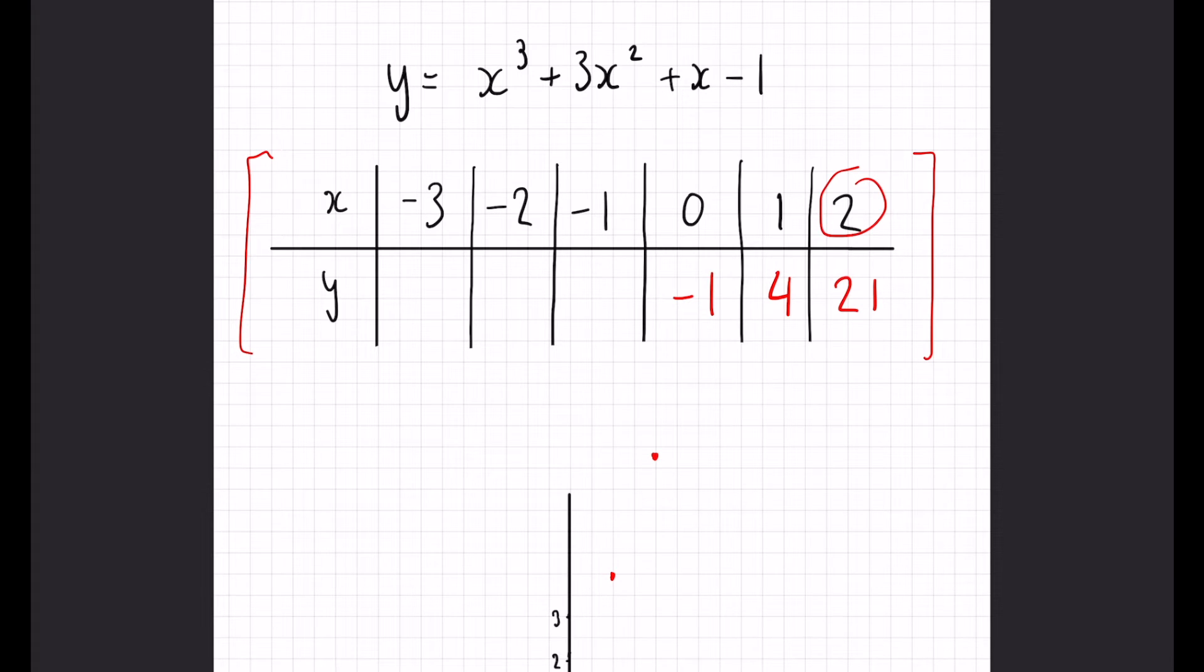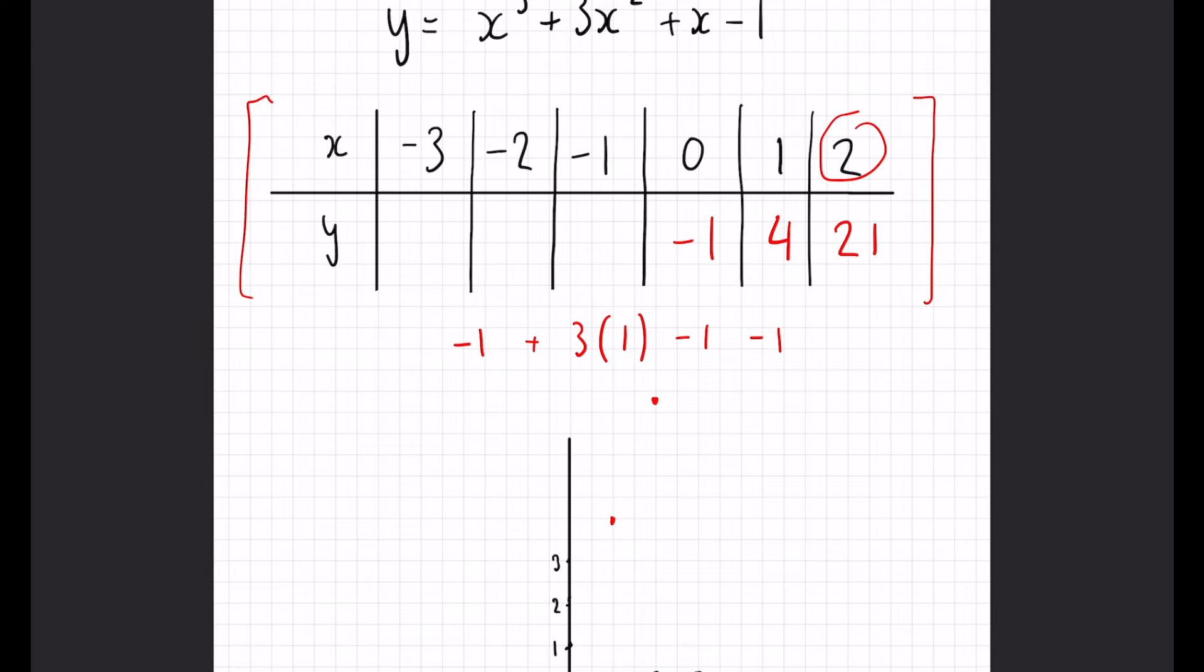Now, we get on to minus 1. So, again, substitute it in. Minus 1 cubed is minus 1, plus 3 lots of minus 1 squared, because of the double negative rules, it's just going to be 1. And then plus x, so minus 1 there again, and minus 1 again. So, minus 1 plus 3 is 2. Minus 1 is 1. Minus 1 again, we're back to 0.